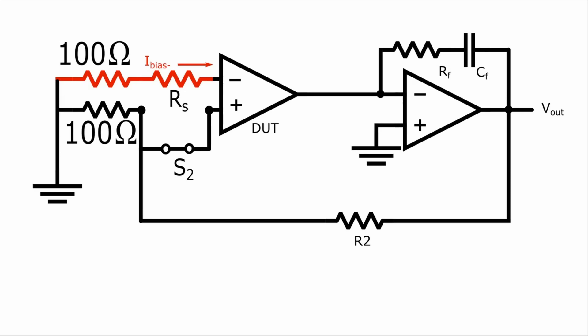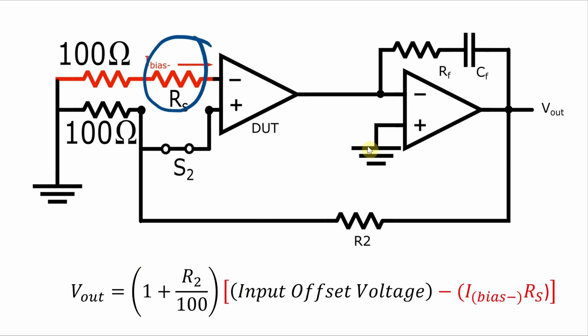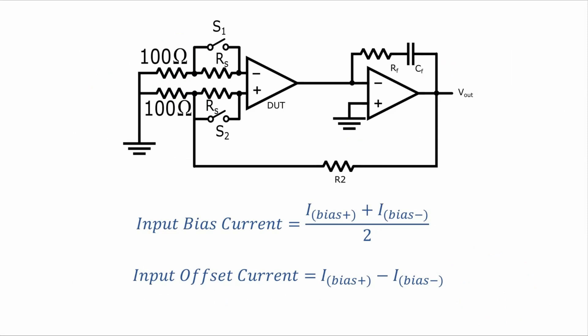Next, we can open S1 and close S2, so that the input bias current will flow through this RS into the inverting terminal and create a voltage at the inverting terminal, which will be measured at the output. This time the output voltage will be the voltage from the input offset voltage minus a voltage due to the current that's flowing through RS here. And then again, with some algebra, you can figure out what the inverting terminal bias current is. So you've got the bias current for the inverting terminal and for the non-inverting terminal, and we can use those two values to figure out the input bias current and the input offset current.